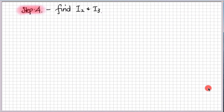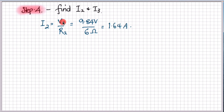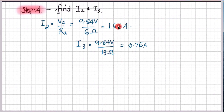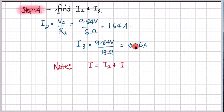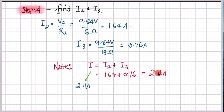Step 4: find the branch currents. Applying Ohm's law, the current through resistor 2 equals the potential drop of 9.84 volts divided by 6 ohms, giving 1.64 amps. For I3, the same potential drop of 9.84 volts divided by 13 ohms gives 0.76 amps. According to Kirchhoff's current law, the total current entering the junction should equal the sum of the branch currents afterwards, which we can verify from these results.